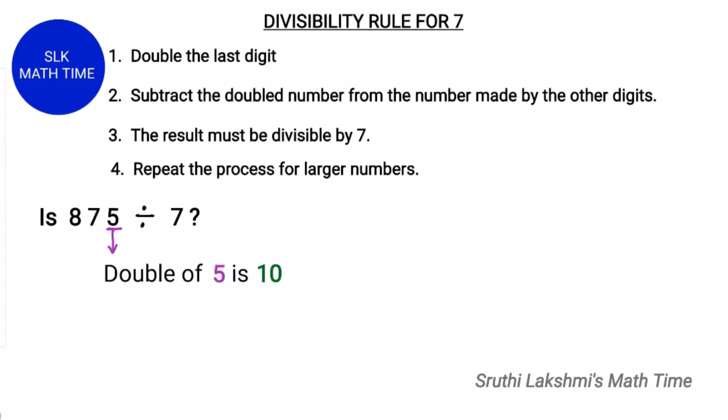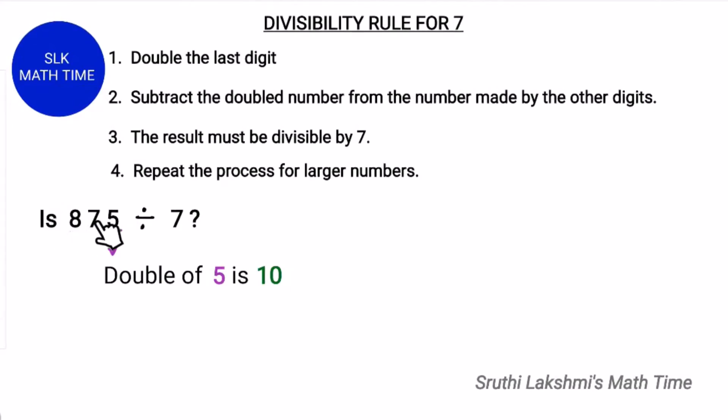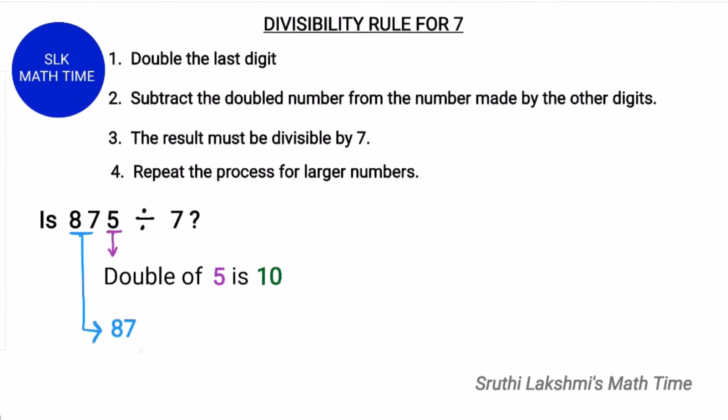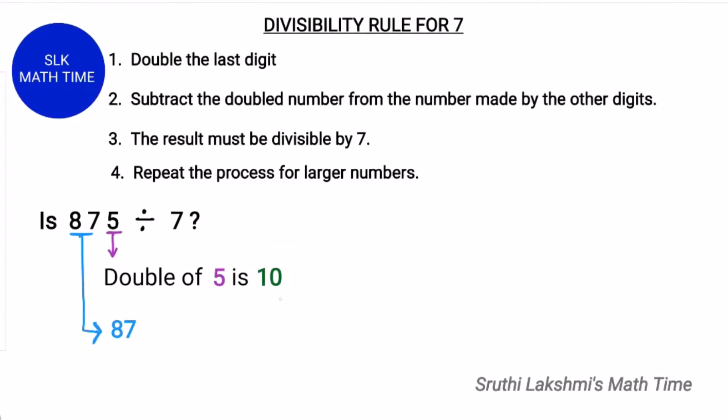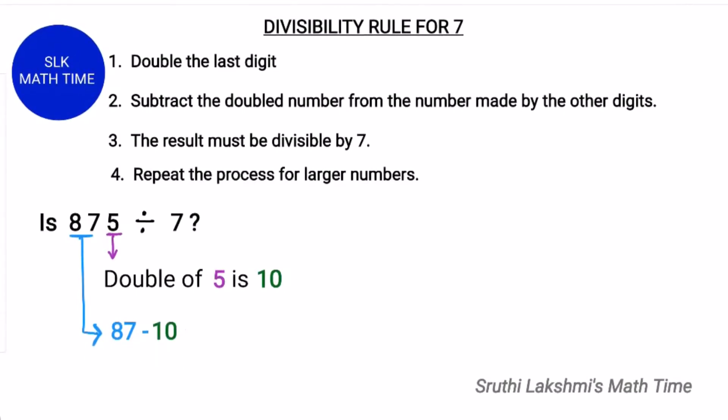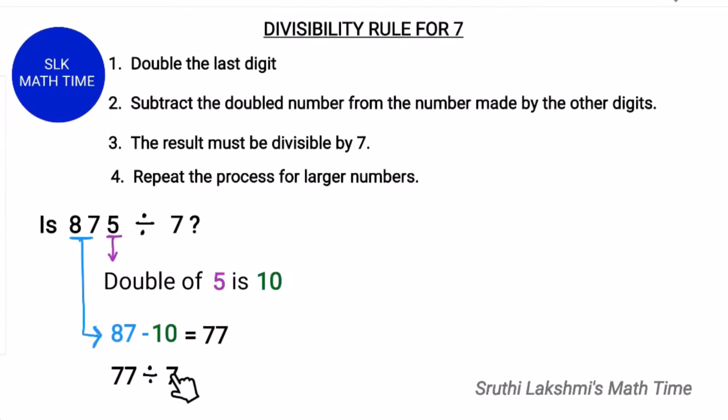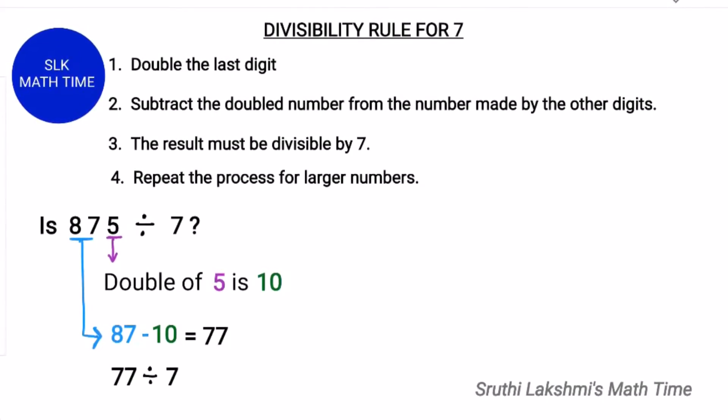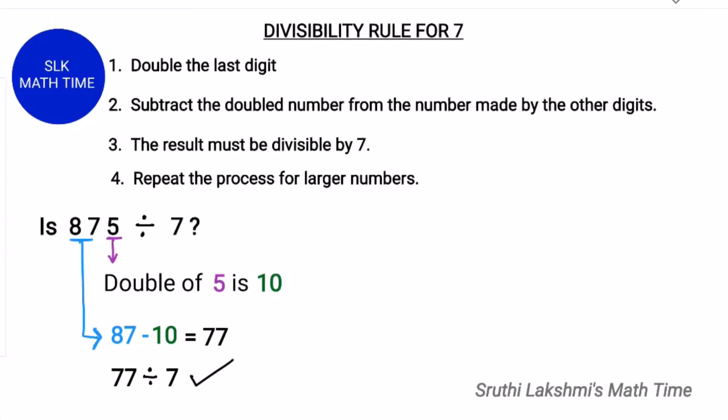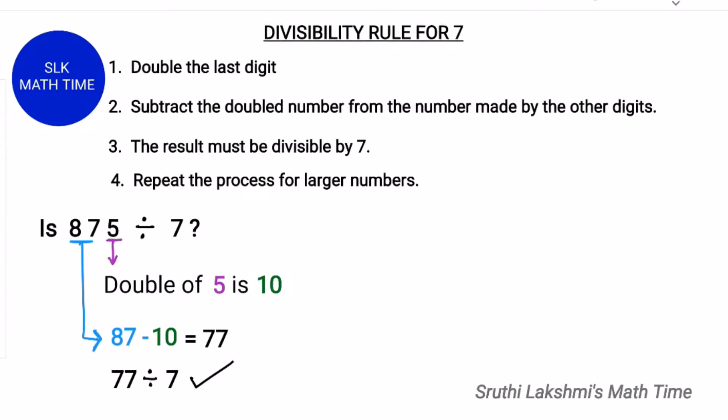And next, the rest of the digits here is 87. So we subtract 87 with this 10. So 87 minus 10 is 77. And next we see if 77 is divisible by 7. 77 is divisible by 7. So 875 is also divisible by 7.